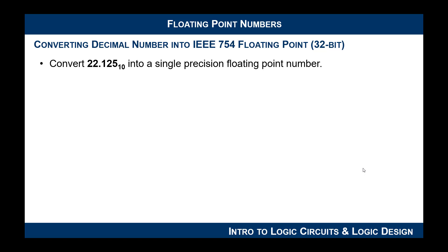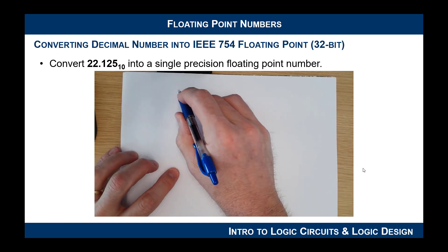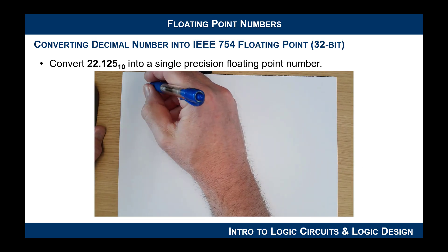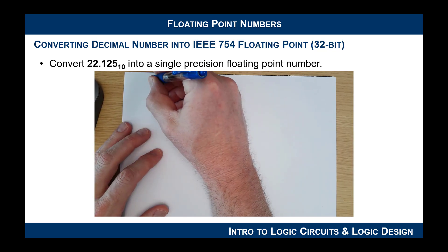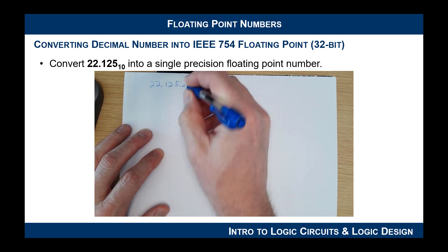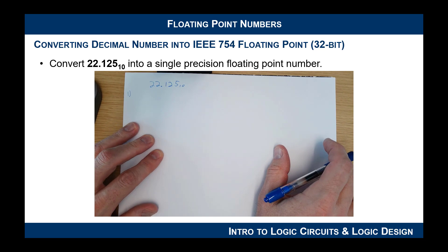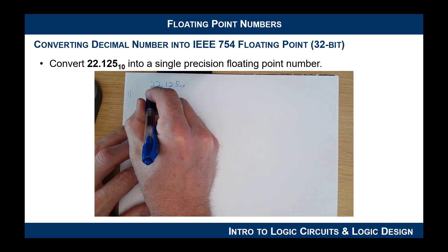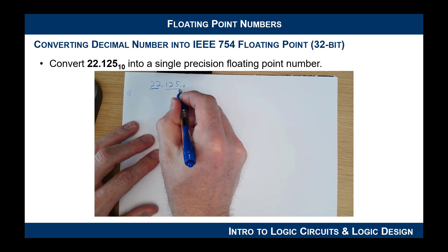Okay, so let's do an example. We're going to take 22.125 base 10 and convert that into a floating point single precision number. Let's begin — I'm going to write down 22.125 base 10, and I want to first convert this into a fixed point binary number. The first thing you want to do is convert the whole number separate from the fractional number.